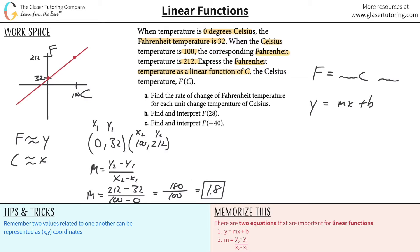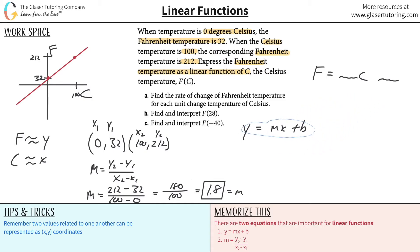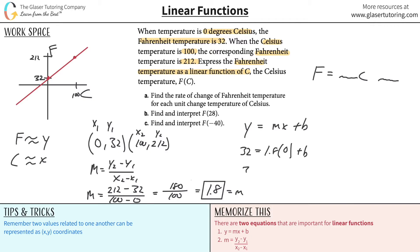If you know the slope and you know a point — meaning it has an x and a y value — you can always find the missing piece, the y-intercept. That's really what we need now to define the function. Let's pick the easier point with the zero in it. The y there is 32, the slope is 1.8, and the x value is 0, plus b. So b equals 32.